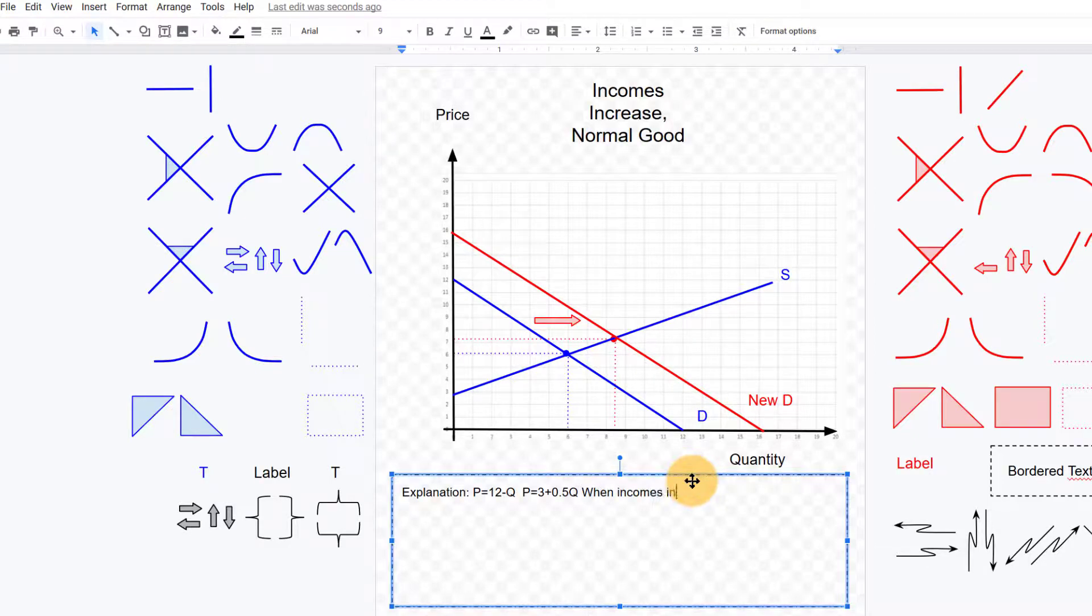In this case I would say when incomes increase for a normal good, demand for the good increases. And then what is our prediction going to be for the equilibrium price? It's going to be a higher amount. Equilibrium quantity, a higher amount. So we would say equilibrium price and quantity increase.